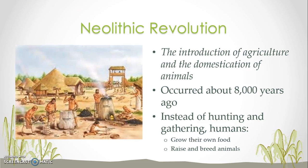When agriculture came about, we call that the Neolithic Revolution — it was a change. That was the introduction of agriculture and the domestication of animals. It occurred about 8,000 years ago, and people decided that it was easier to grow their own food than it was to hunt and gather. And so they began to farm and also raise and breed animals.